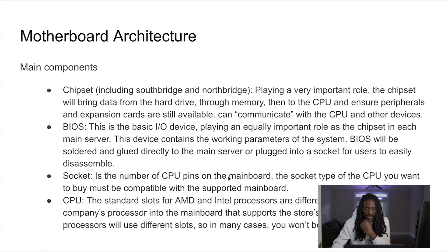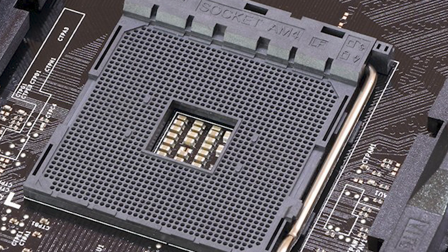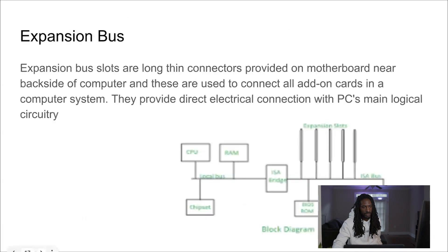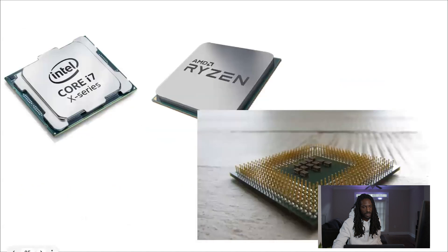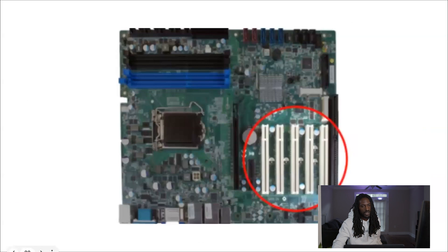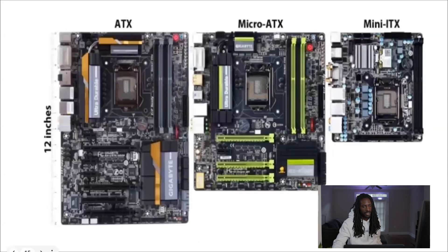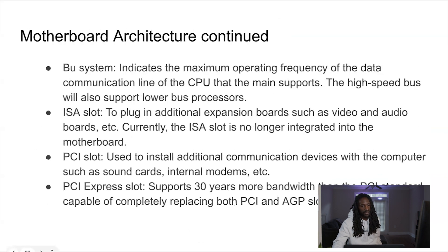The socket is the number of CPU pins on the main board. The socket type of the CPU you want to buy must be compatible with the supported motherboard. Whether it's Intel, Nvidia, or AMD, it has to be compatible with your motherboard or else it's not going to work because of the number of pins. Each chip manufacturer makes their pins specific to whatever motherboards you're going to use. I actually made a computer a long time ago and ended up buying the wrong motherboard that didn't work with the chip — it was a hassle.